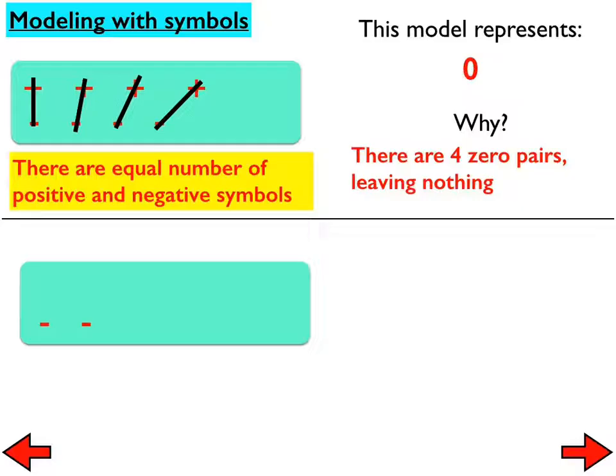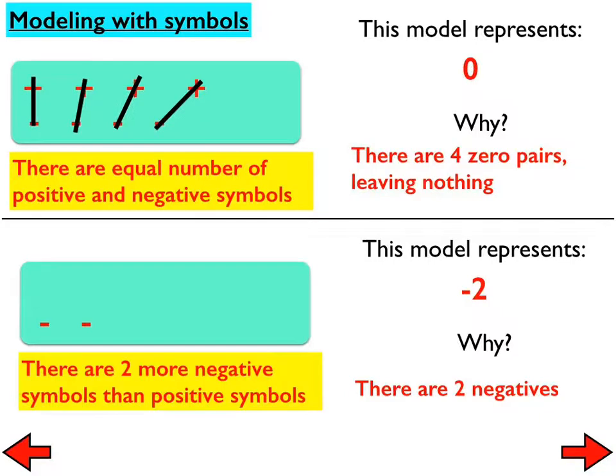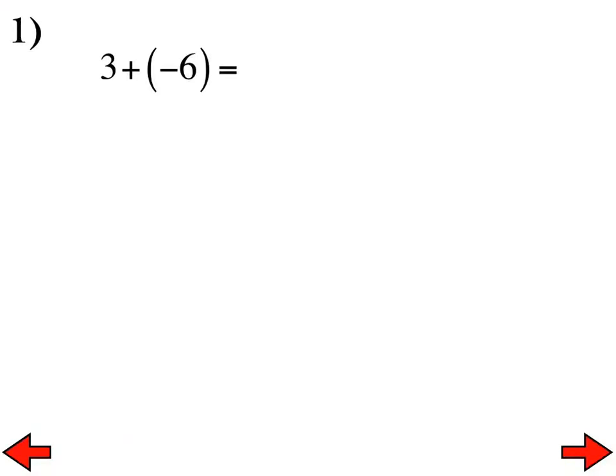How about this one? It represents negative two. All we have are two negatives in that picture. Another way of looking at that is we still have two more negative symbols than positive symbols. So let's now go to number one and do it together. The idea behind modeling is it gives us a way to help us find the answer, but it also helps us prove why the answer is what we say it is. We're going to do this both with symbols and with number lines, only for a couple of days, and then we'll transition into whatever way works best for you.